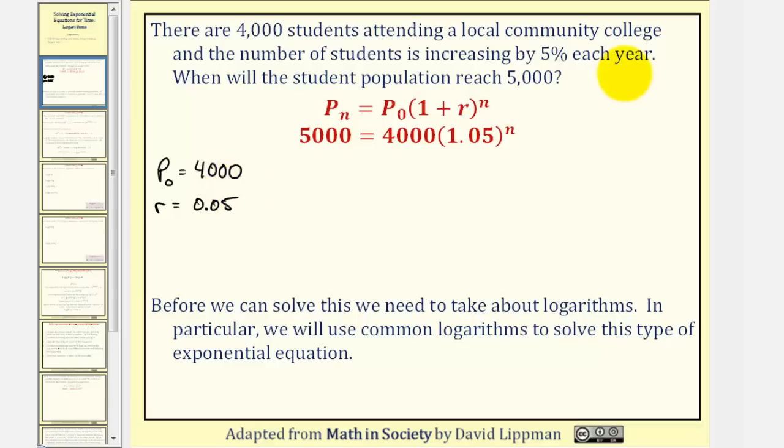And the question is, when will the student population reach 5,000, where Pₙ is the population after n years? So Pₙ would be 5,000, and the question is how long will it take to reach this level. Therefore, n, the number of years, is the unknown.